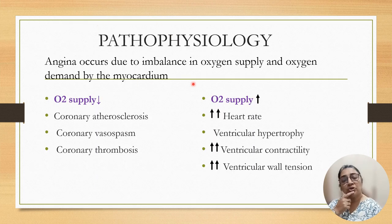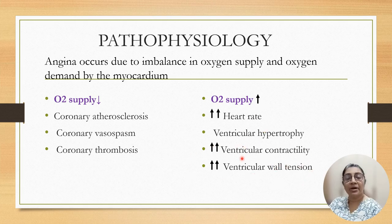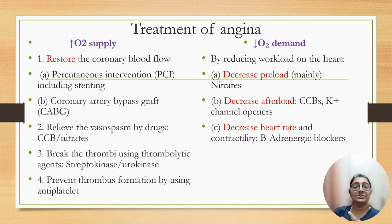This is the pathophysiology of angina. It occurs due to imbalance between oxygen supply and oxygen demand of the myocardium. Oxygen supply decreases due to coronary atherosclerosis, coronary vasospasm, or coronary thrombosis. Oxygen demand increases when heart rate, ventricular hypertrophy, ventricular contractility, and ventricular wall tension increase. So the major question is how to treat angina — we must balance by improving oxygen supply and reducing oxygen demand.